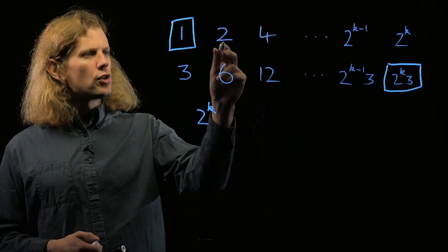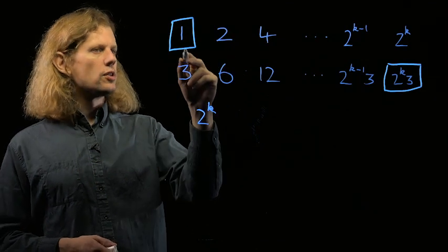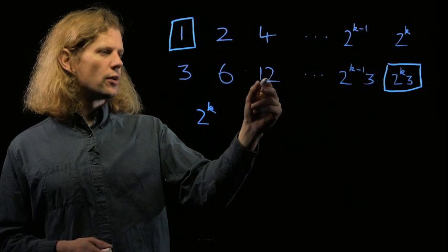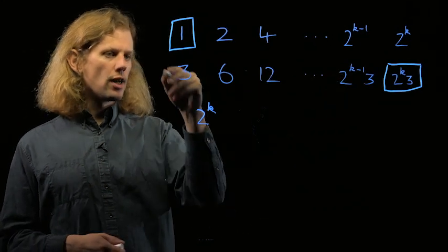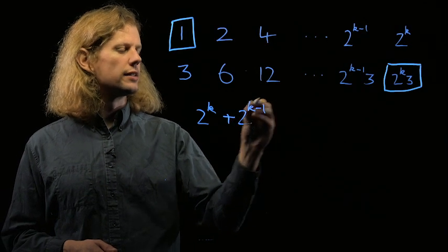If the last term in the top row that we use is 2, we have fewer choices, though. So if we use 2, then we use or not use 6, use or not use 12, and so on, but we don't have the choice of 3 anymore. So that gives us 2 to the k minus 1 possibilities.